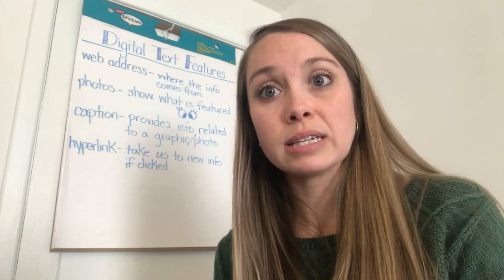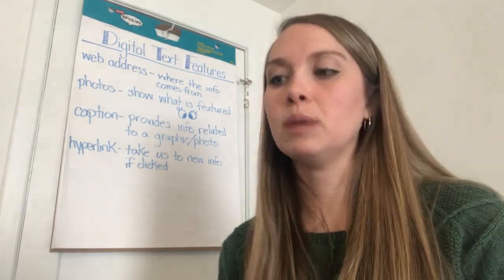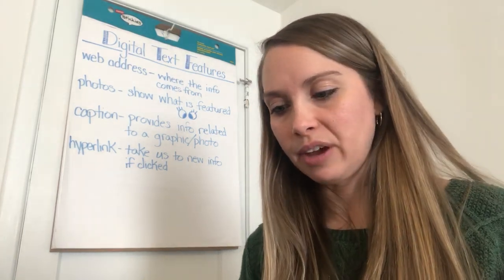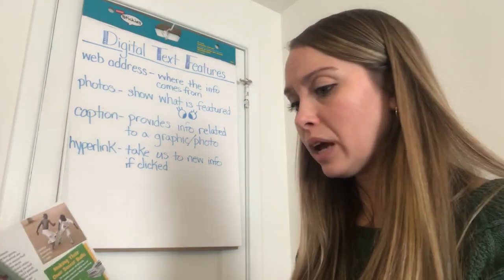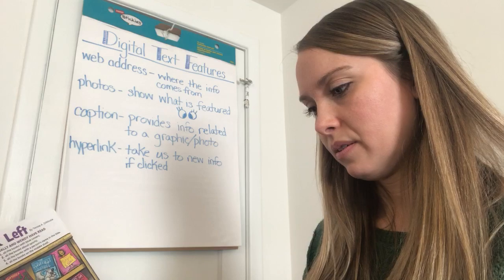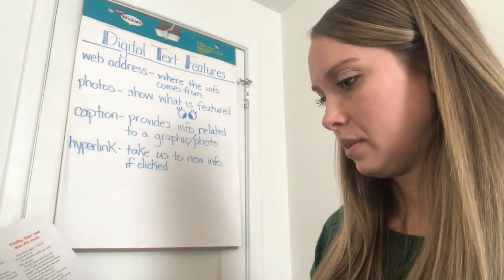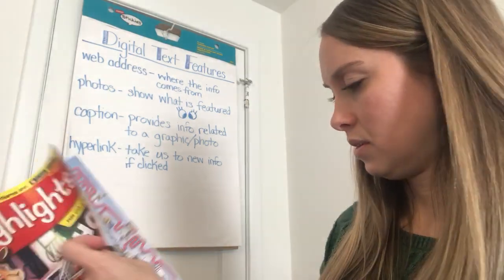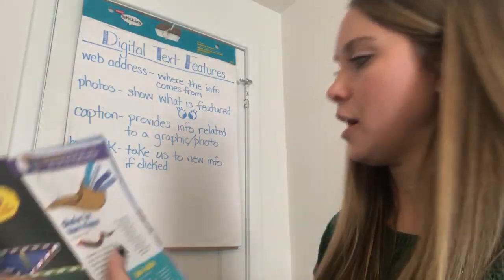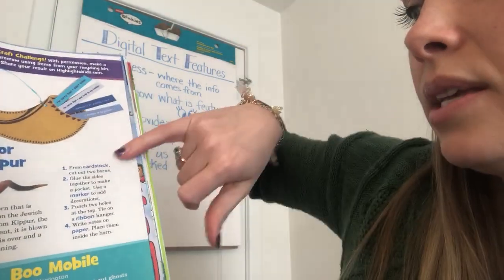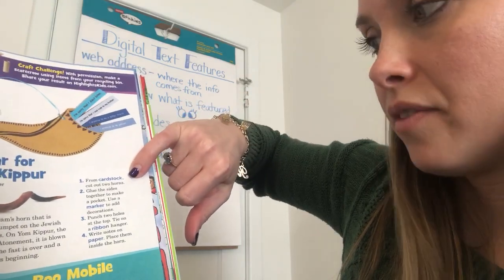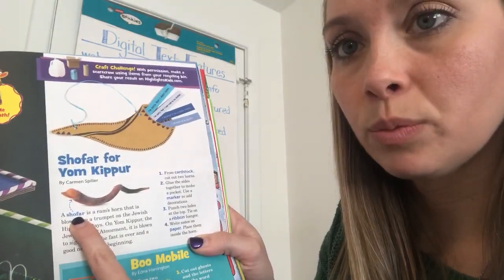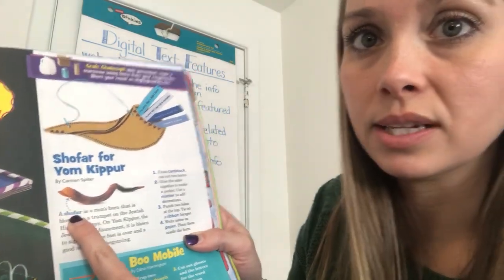Another text feature is bold print, or keywords. We've talked about how sometimes words might be italicized and slanted, or bold and darker. See how 'cardstock' here is a different color and a darker, bigger font? It's bolder. That bold print is telling us we need to pay attention to it — it's a keyword, it's important to the topic.